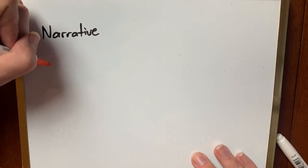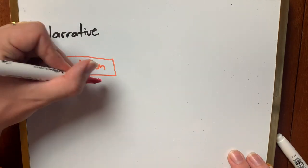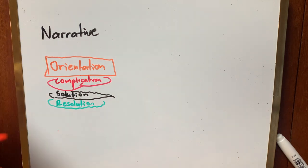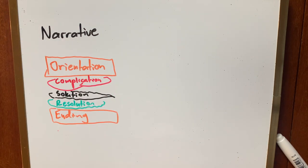If you're writing a narrative, you'll probably need the narrative structure with an orientation, a complication, a solution, a resolution and an ending, sometimes with additional complications and solutions along the way.